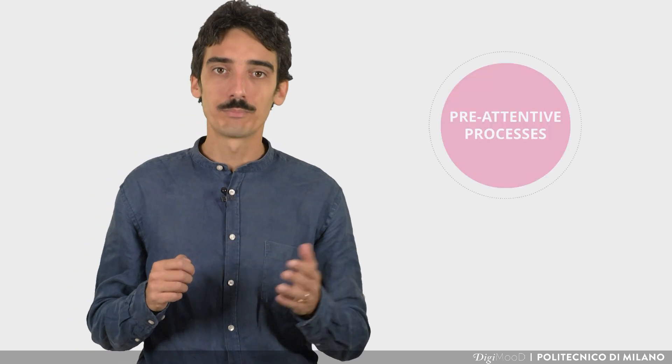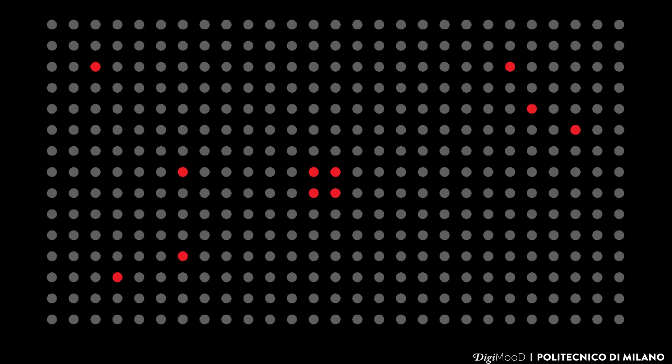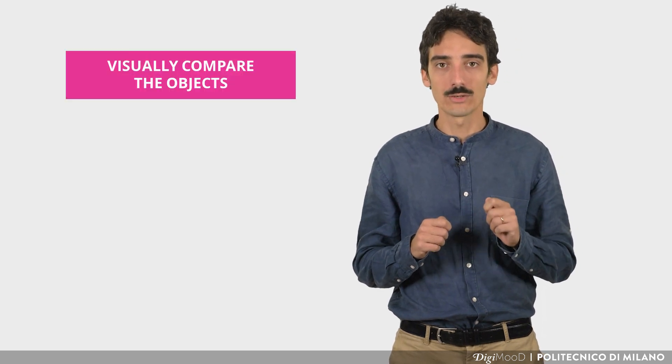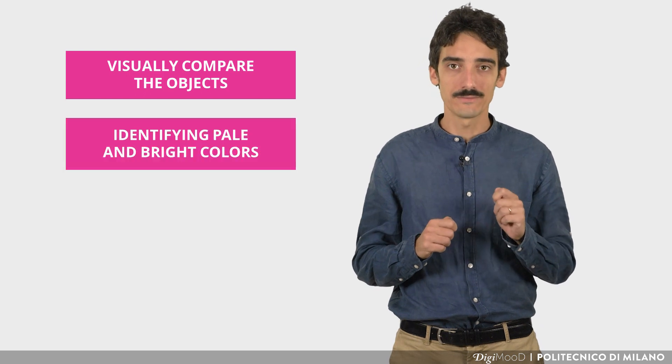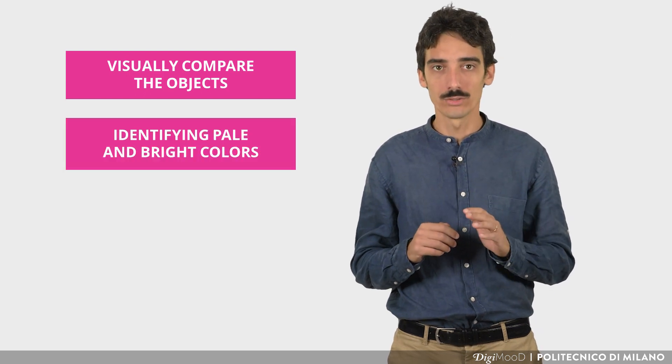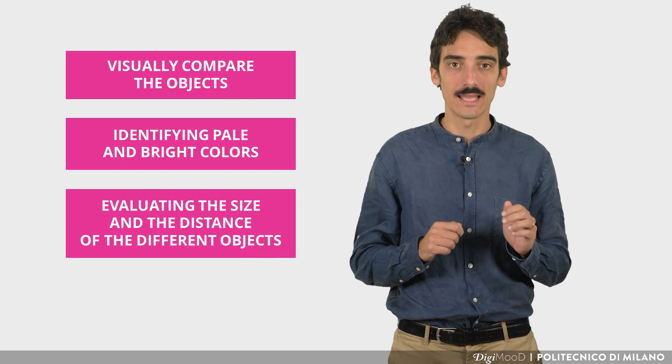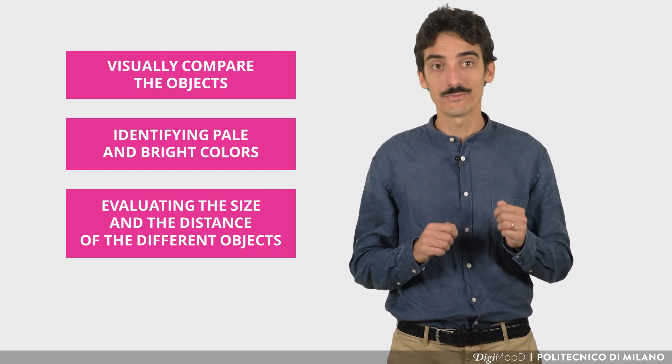We can call it pre-attentive processes. Like in this case, it's difficult not to focus on the red dots. In fact, in our everyday life, we are used to visually compare the objects around us, identifying pale and bright colors, evaluating the size and the distance of the different objects.